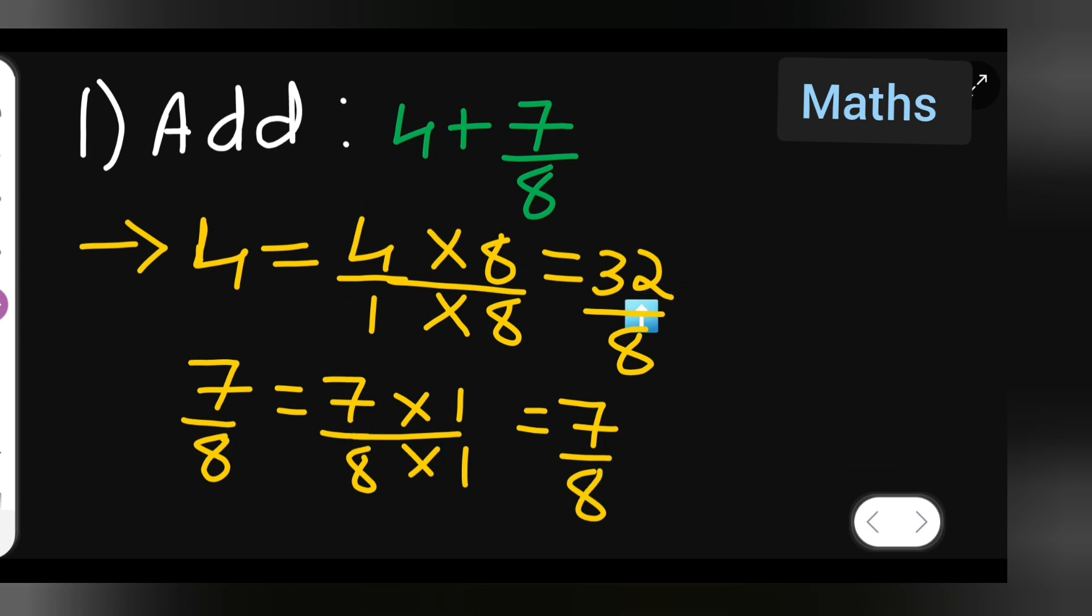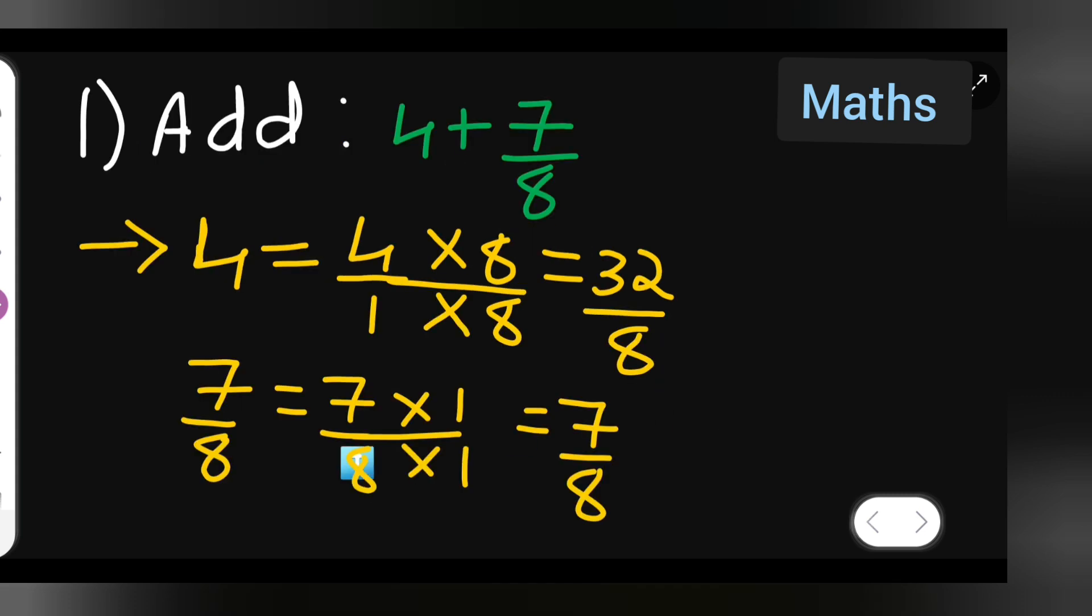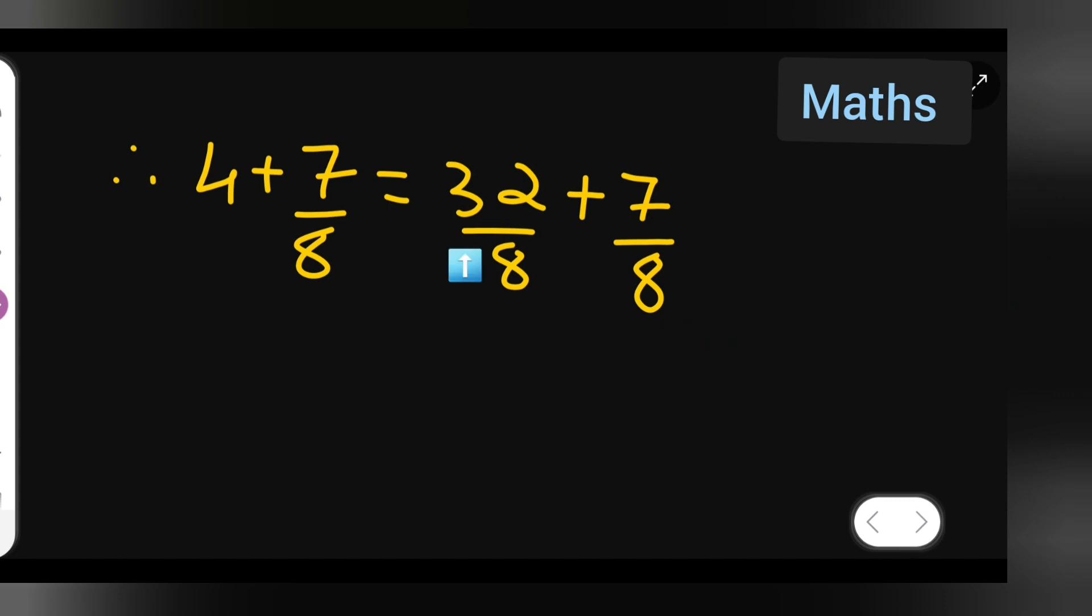Then for 4 your answer was 32 upon 8. So that's what I have written for 4, 32 upon 8, put plus sign, 7 upon 8 what answer y'all got? Same 7 upon 8. So plug that value over here. After that what y'all are going to do? Take 8 to be common.